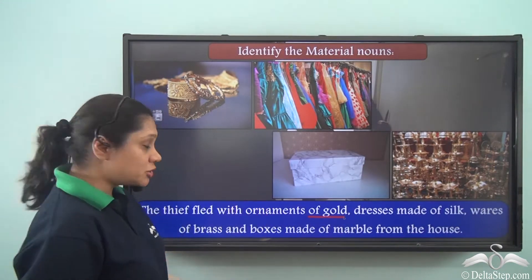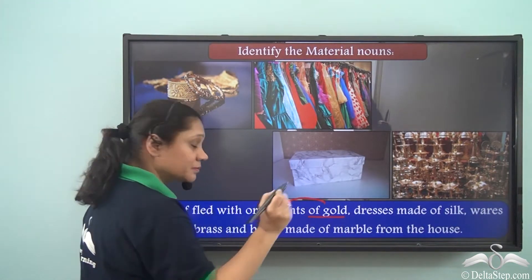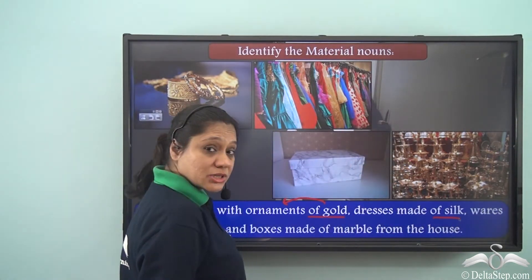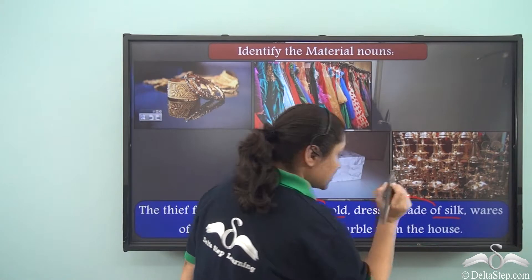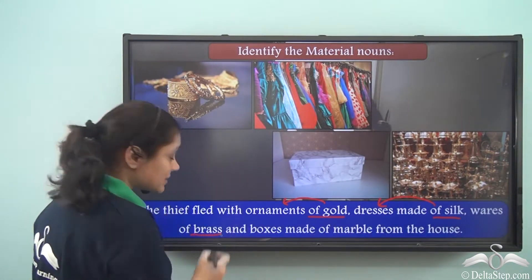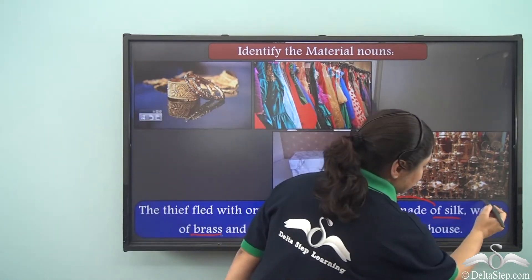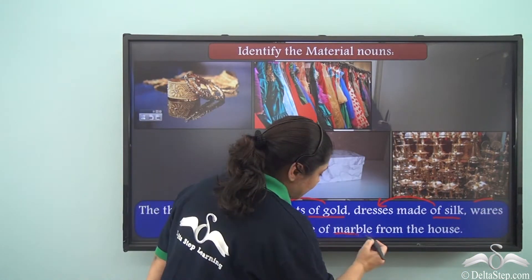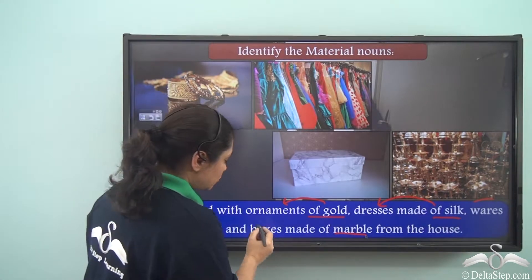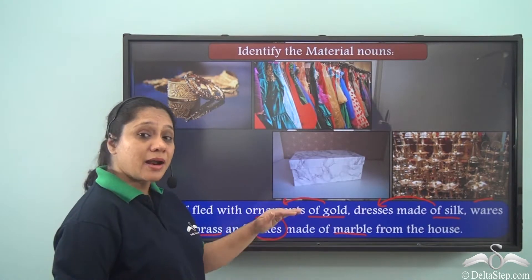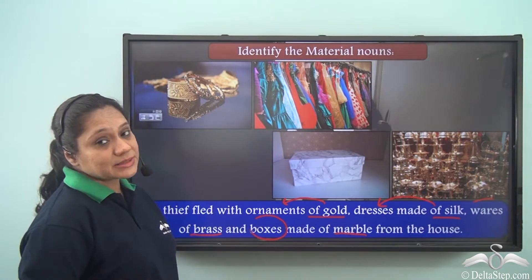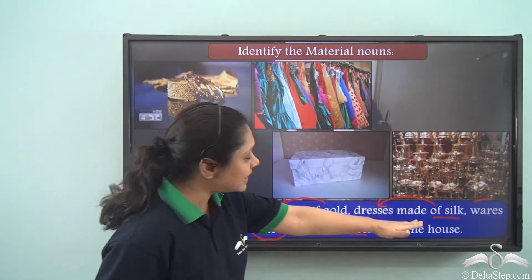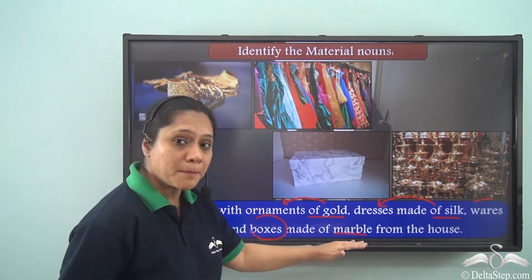Gold, which is used to make the ornaments, is a material noun. Silk, which is used to make the dresses, is another material noun. Brass, used to make the wares, is another material noun. So this sentence has many material nouns: gold, silk, brass, and marble.